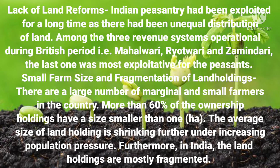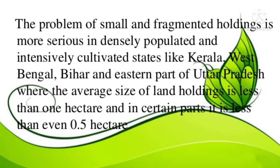The next factor is small farm size and fragmentation of landholding. There are a large number of marginal and small farmers in the country. The average size of landholding is shrinking due to the law of inheritance, and landholdings are mostly fragmented. Even where states' consolidation of landholdings was carried out once, a second consolidation is required. Small and fragmented sizes of landholdings are uneconomic.